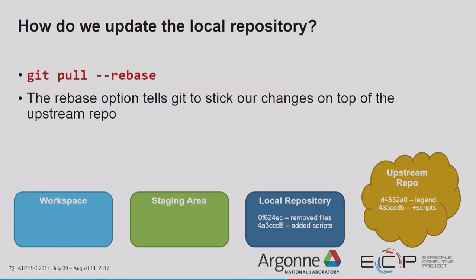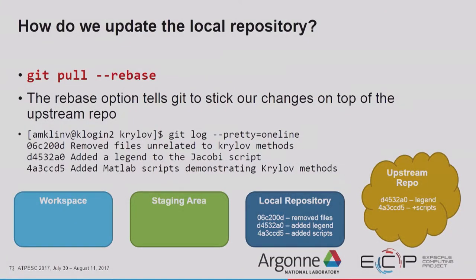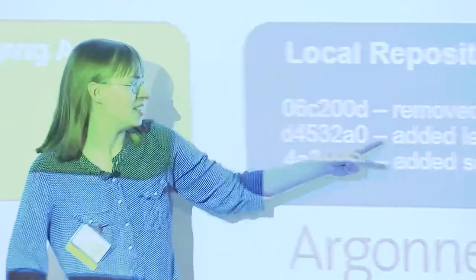What we're going to do is `git pull --rebase`. `Git pull` is the opposite of `git push` — push sends local up to upstream, pull brings upstream down to local. I like the rebase option because it sticks our changes on top of the upstream repository. After `git pull --rebase`, our local repository shows: my initial commit adding MATLAB scripts, Joy McClemmons' commit adding a legend to the Jacobi script, and then my commit removing files unrelated to Krylov methods. Then when I push, it goes through because the upstream and local now have the exact same history.